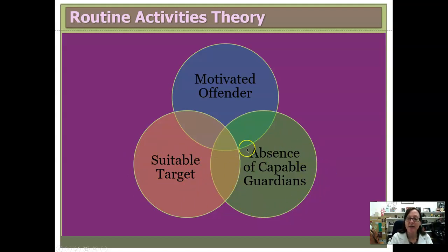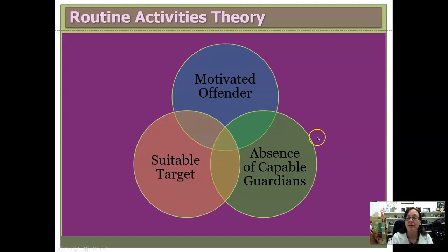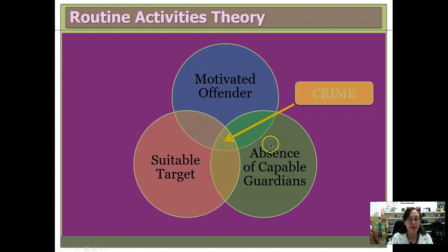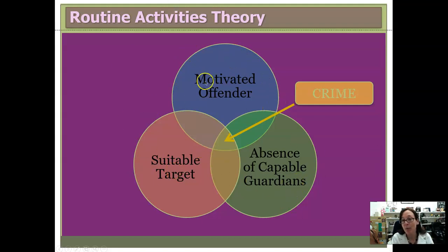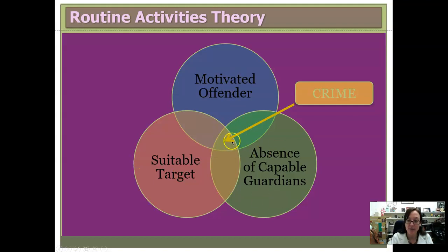The absence of capable guardians means there is nobody or nothing there to stop the crime from happening. Capable guardians could be police, other people, security cameras, or other security systems. Routine activities theory says that when all three things converge in time and space, that is when a crime happens. It doesn't mean crime can happen — it means a crime will happen, because it is the natural, normal response when these three things converge. If a crime is not happening, it means one or more of these things is missing. If any of these things are absent, a crime is not going to happen. But if they all converge in time and space, that is when crime is the natural, normal outcome for that situation.